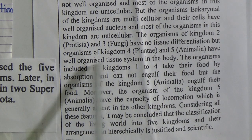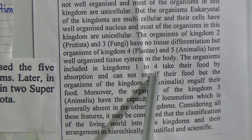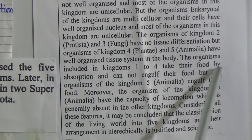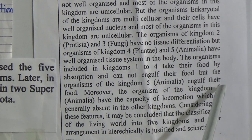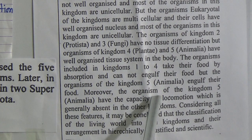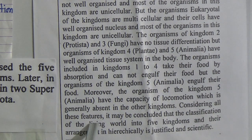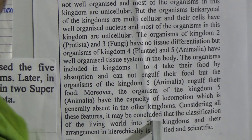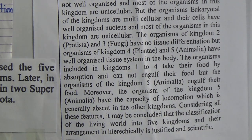The organisms of kingdoms one, two, and four take their food by absorption and cannot engulf food. But organisms of kingdom five, Animalia, engulf their food. Moreover, organisms of kingdom Animalia have the capacity for locomotion, which is generally absent in the other kingdoms. Considering all these features, it may be concluded that the classification of the living world into five kingdoms and their hierarchical arrangement is justified and scientific.